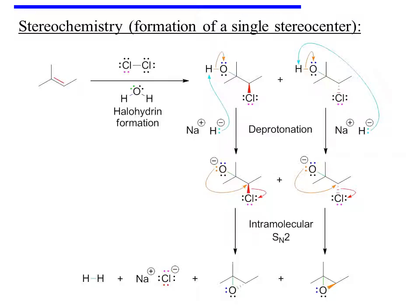In the next step, the halohydrin is deprotonated using a base such as sodium hydride, resulting in the formation of an alkoxide. The alkoxide engages in an intramolecular SN2 reaction, attacking the center bearing chlorine from the side opposite the leaving group. So if the chlorine resided on a wedge, then the oxygen attacks from underneath and the new carbon-oxygen bond will be a dash. The reverse happens for the enantiomeric alkoxide. This results in the formation of two epoxide products which are enantiomers of one another.